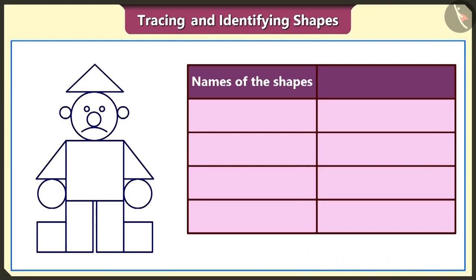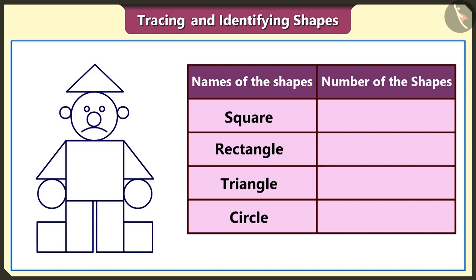The square, the rectangle, triangle and circle are used to make this doll. Let's now tell him the number of these shapes used in his making. We can make him smile.